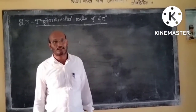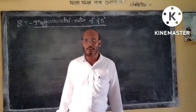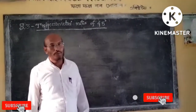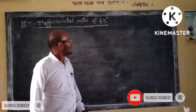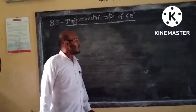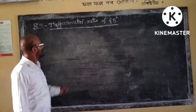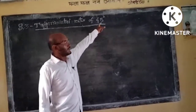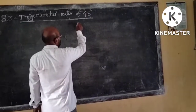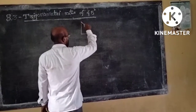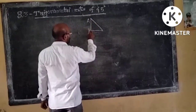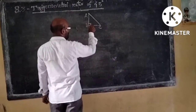Hello friends, welcome to our channel. Today we will discuss self-taught trigonometry for class 10. The topic is trigonometric ratios of angle 45 degrees. We will draw a right angle triangle ABC where B is a right angle.